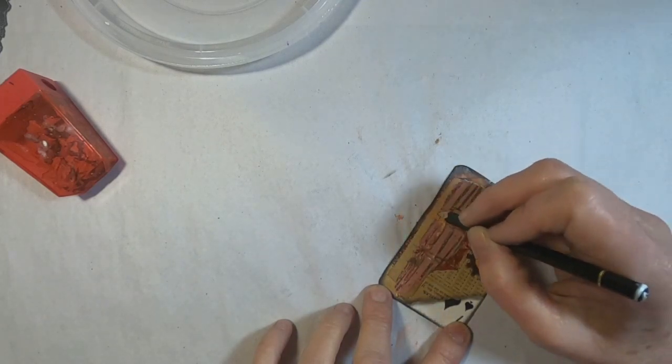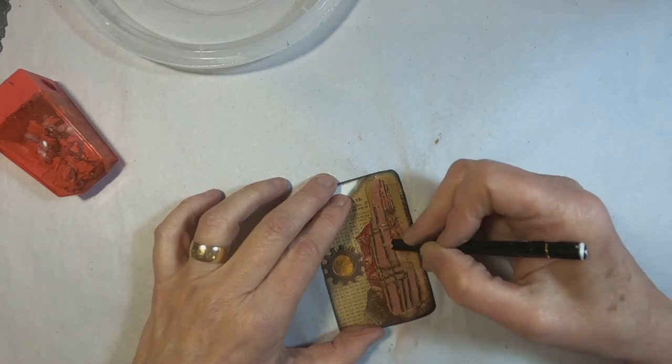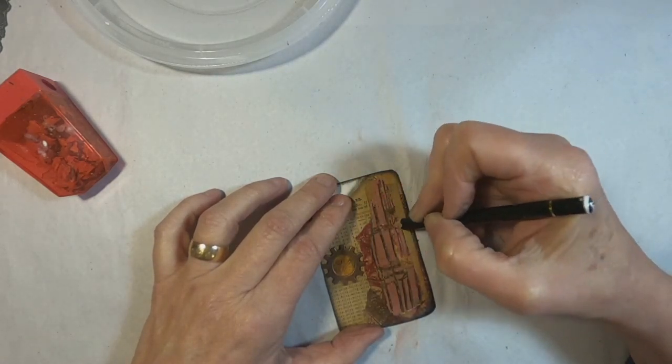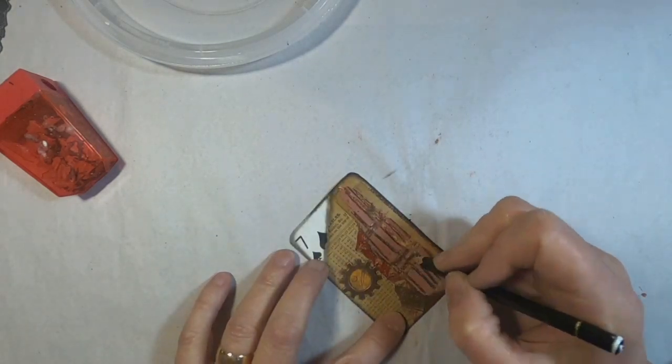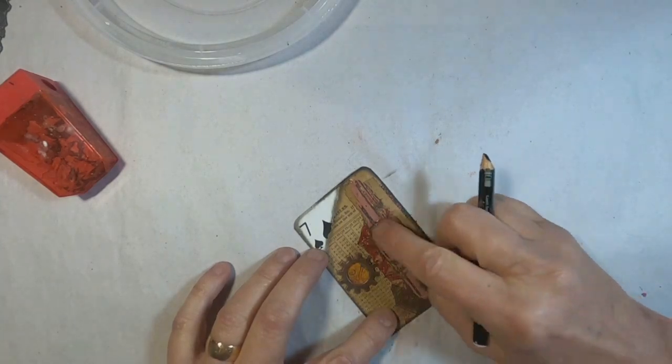Now that the texture paste is dry, I'm outlining it with my Stabilo All pencil. So I'll get it all outlined and then take a little bit of moisture on my finger and kind of smudge that into place.